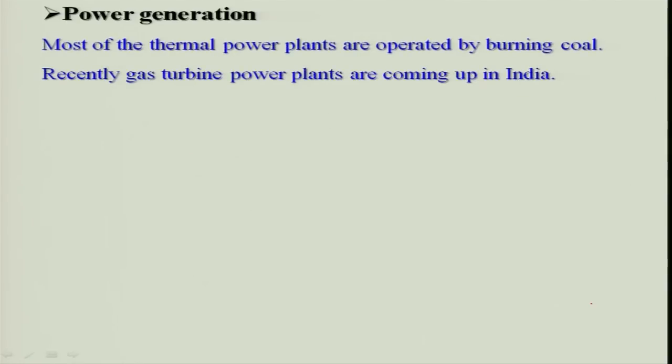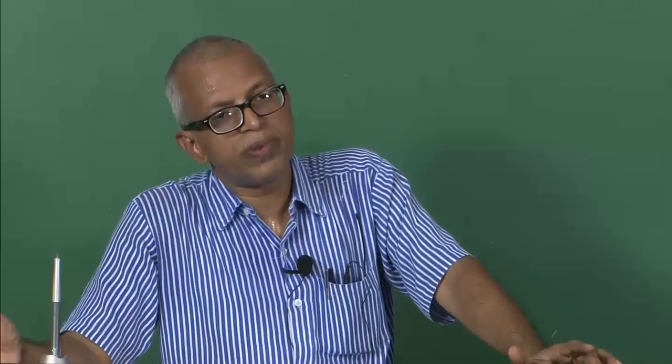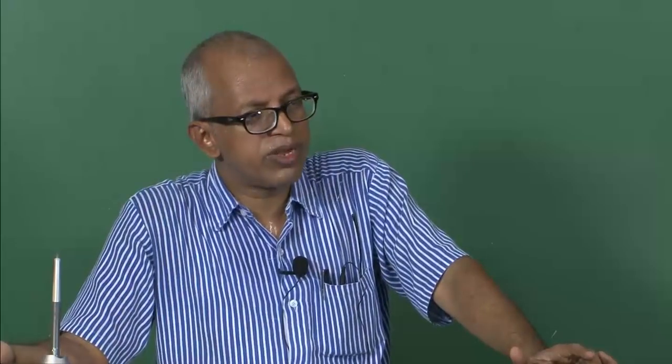For power generation, most thermal power plants are operated by burning coal. Today, around 60 to 70 percent of the power is generated by burning coal. The rest is done by nuclear, non-conventional energy, diesel power, and other means.